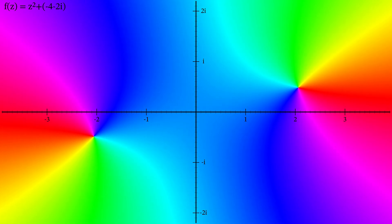A degree 2 polynomial always has two roots on the complex plane. In fact, this is true of any polynomial — a degree n polynomial has n roots on the complex plane. This result is known as the fundamental theorem of algebra.